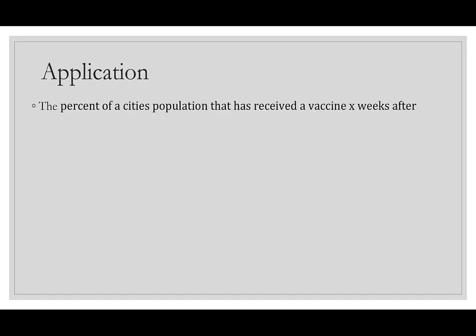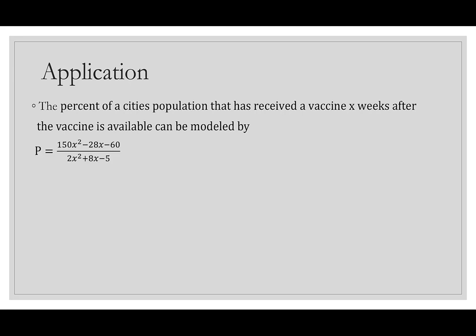One more application: the percent of a city's population that has received a vaccine x weeks after availability is modeled by p(x) = (150x² - 28x - 60)/(2x² + 8x - 5). Finding the limit as x → ∞: both numerator and denominator have degree 2, so we compute 150/2 = 75. This tells us that in the long run, no more than 75% of the population will have received the vaccine.